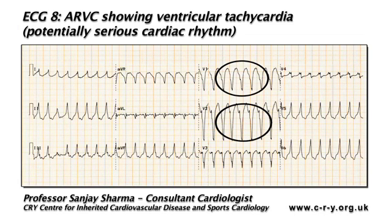The presence of T-wave inversions beyond V1 in a post-pubertal Caucasian athlete or individual who plays sport should always raise the suspicion of underlying arrhythmogenic right ventricular cardiomyopathy. The situation is somewhat difficult in younger pre-pubertal individuals because T-wave inversions are normal in these physically immature individuals.